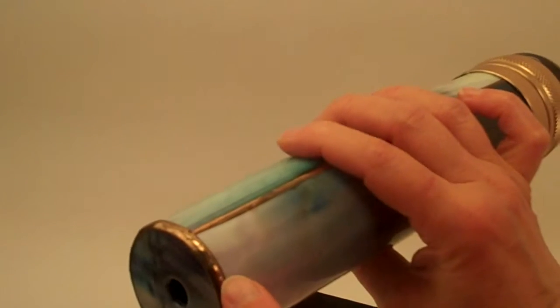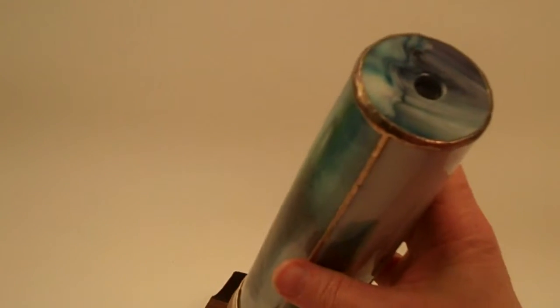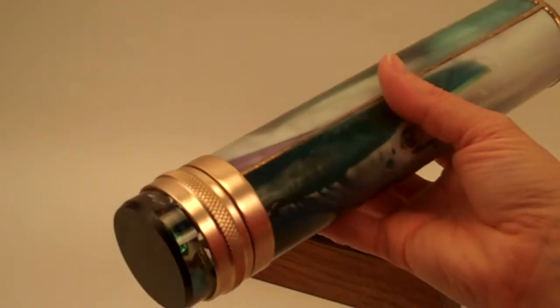Then the kaleidoscope is built with traditional copper foil stained glass technique. The lens and the front mirror system is built inside and all sealed.